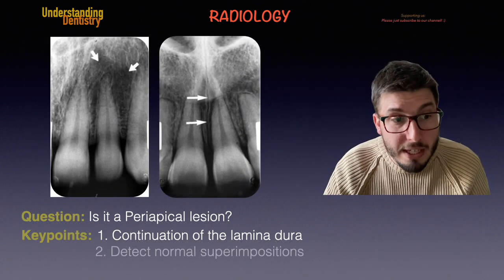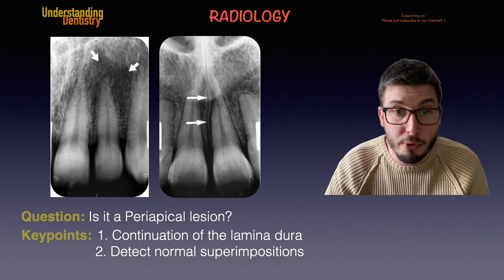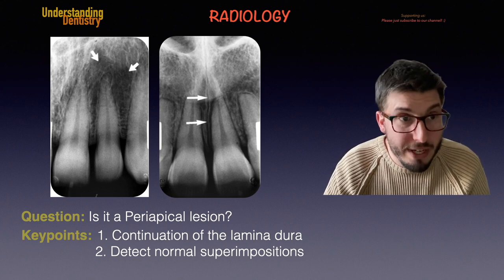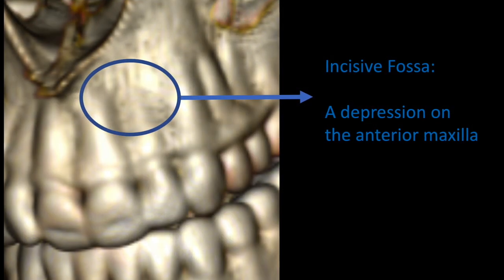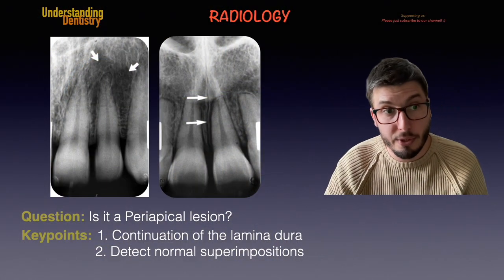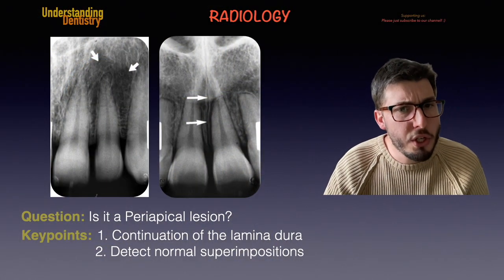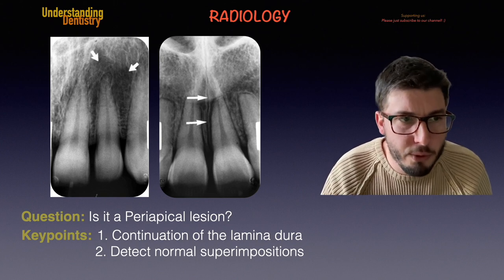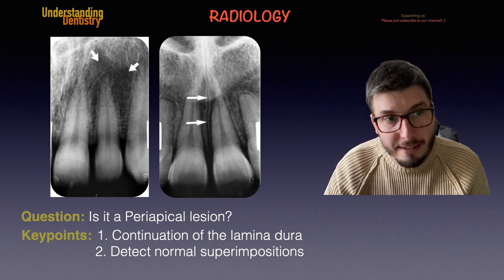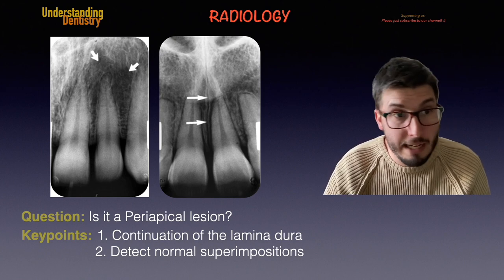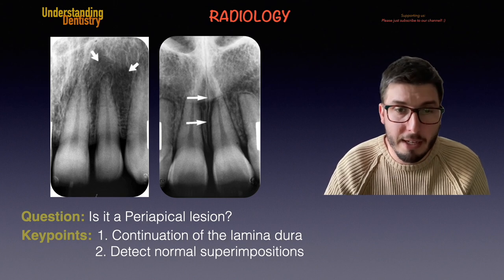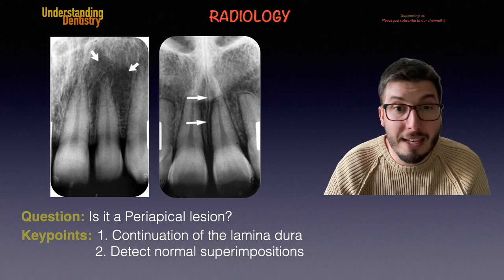The second key point is to detect the normal superimpositions that are expected in this region. In the radiograph on the left, we are seeing the incisive fossa — it's not a lesion. There's also the canine fossa close to but distal to this area. How can we be sure? Again, we follow the shape of the lamina dura, which is surrounding the entire apex. The incisive fossa can show as a radiolucent area because there is less bone in this area.